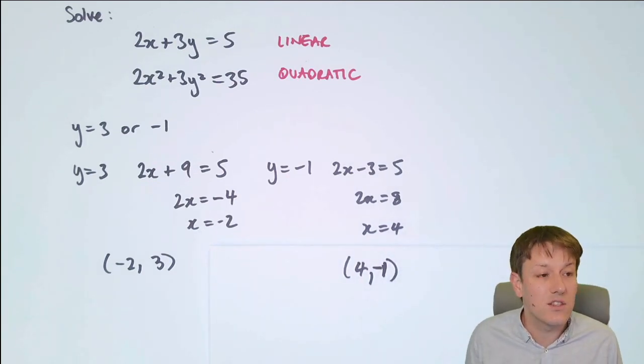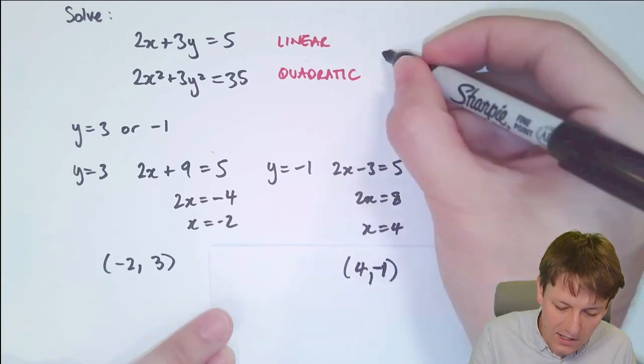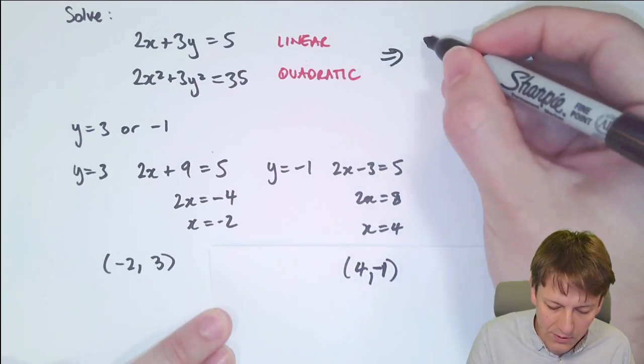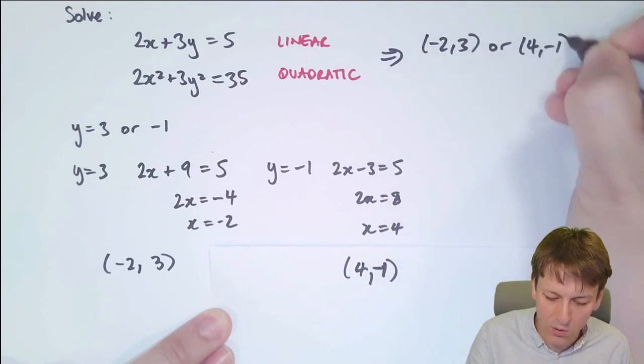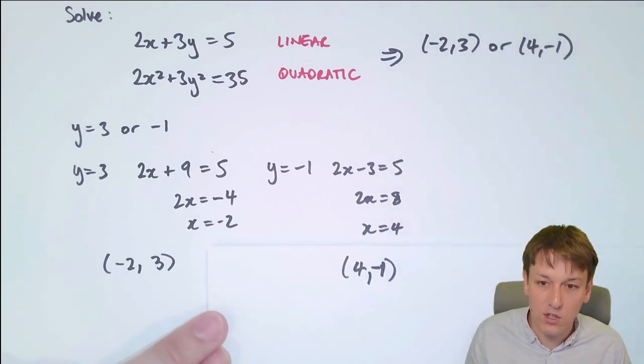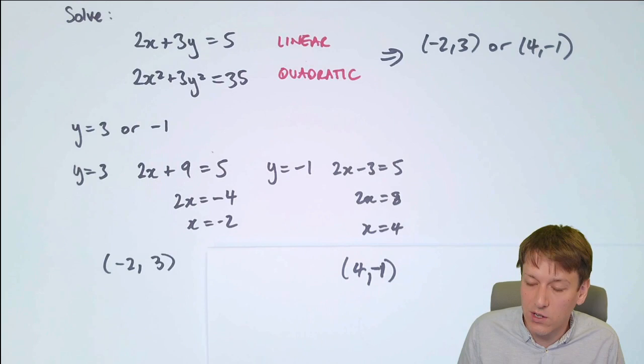Together, these two form the full solution to the simultaneous equations. We've got that either x equals minus 2 and y equals 3, or x equals 4, y equals minus 1, which we often express as coordinates like this. And that's the key to why it's so important to substitute into the linear equation, not the quadratic one.